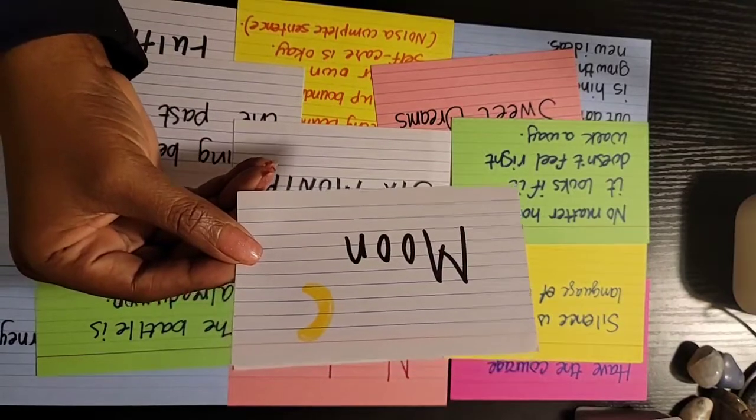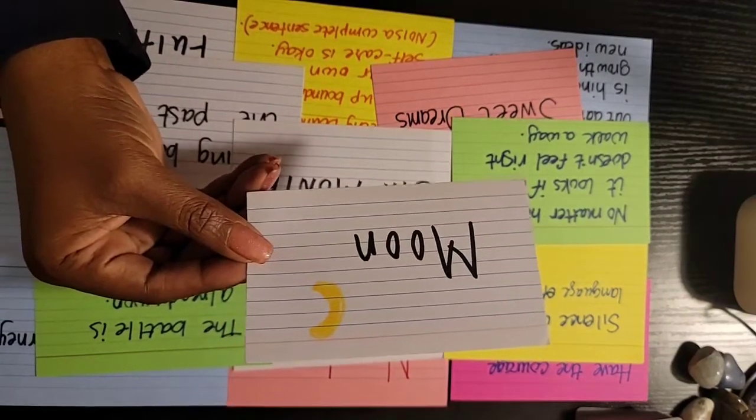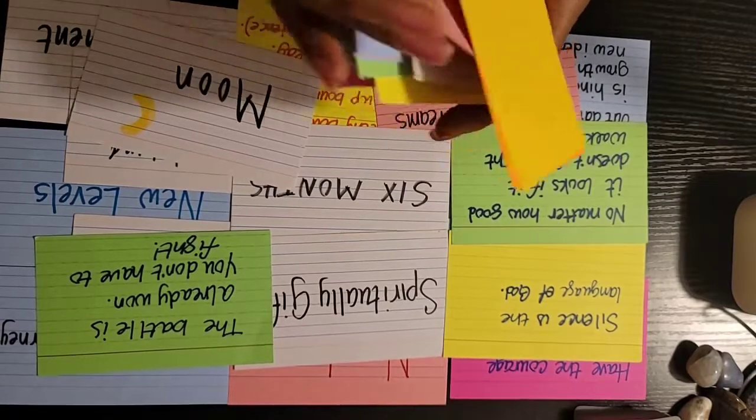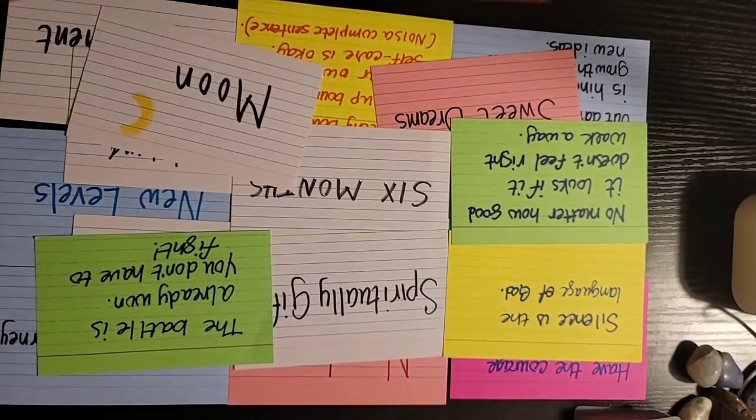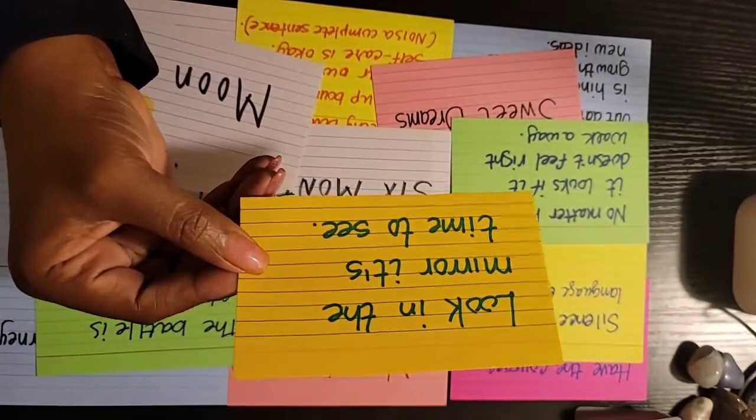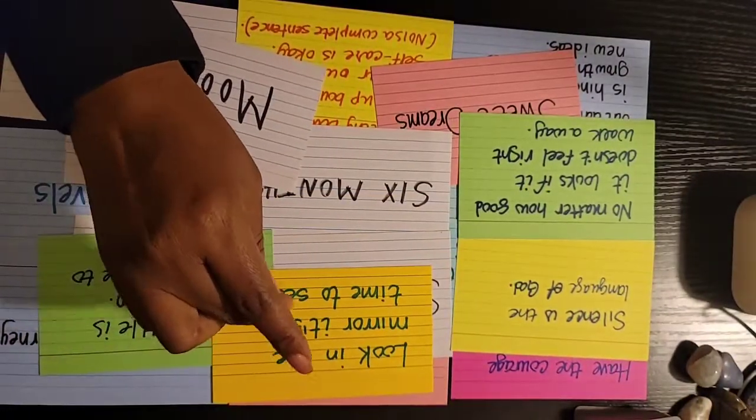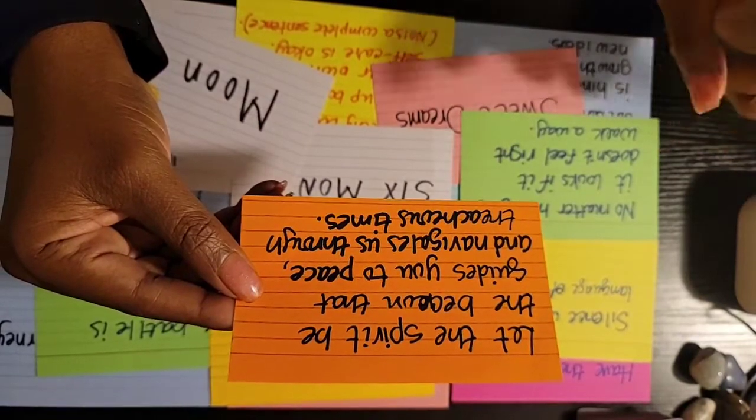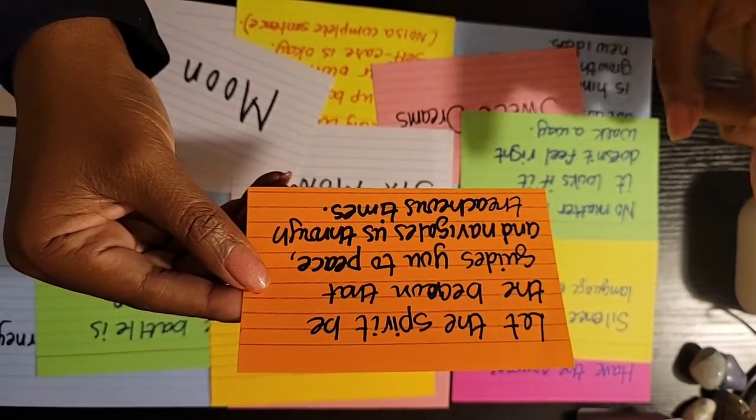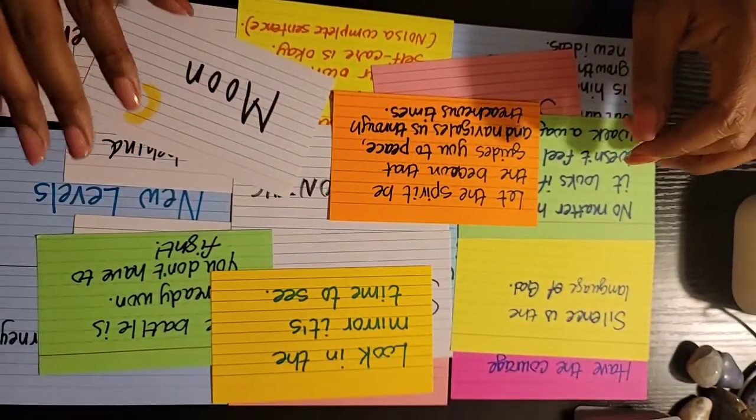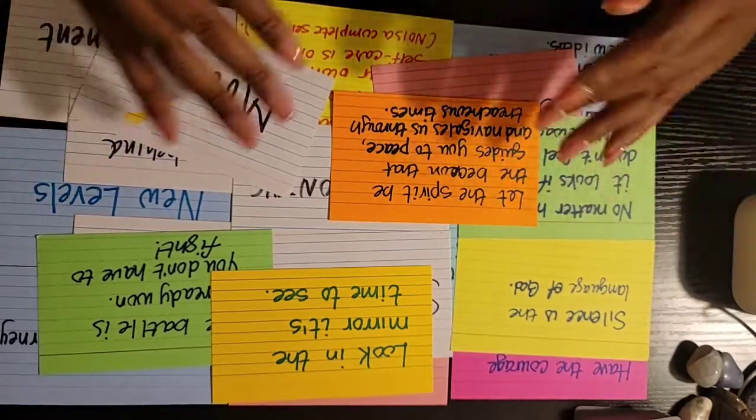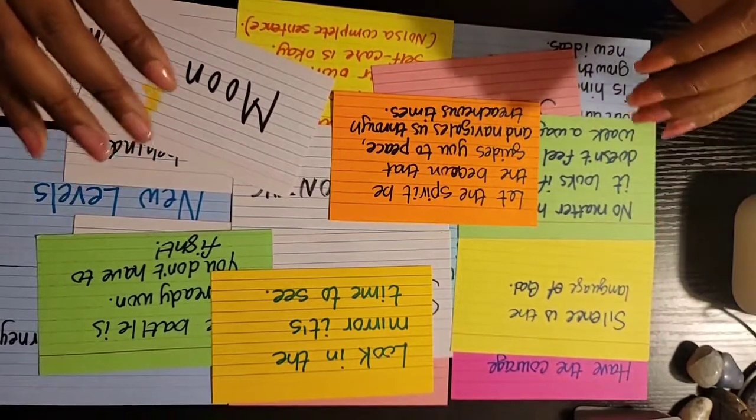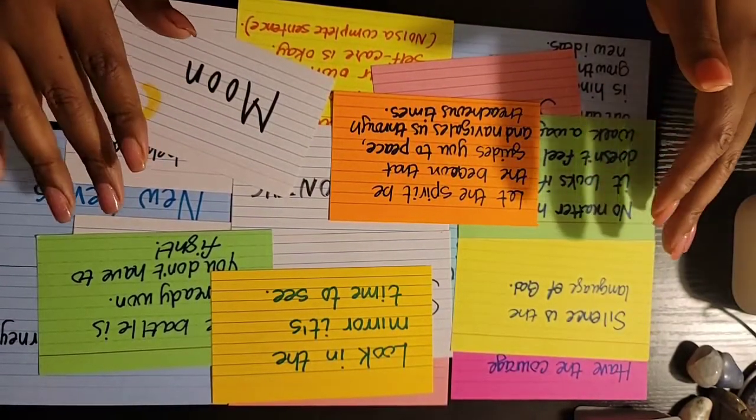There are some things that are hidden. The moon symbolizes things that are hidden. There are things that are hidden that God is about to bring to the light, Taurus. Look in the mirror, it is time to see how great you are, how spiritually gifted you are, how blessed you are. Let the spirit be a beacon that guides you to peace and navigates you through treacherous times. Let the spirit guide you.